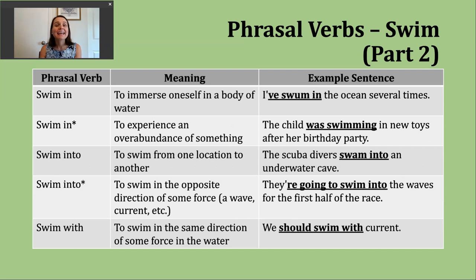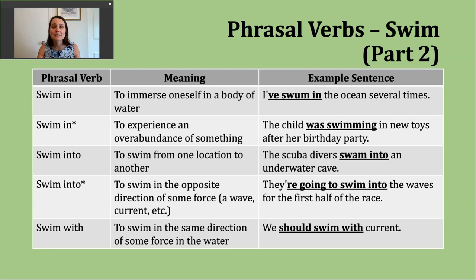The next phrasal verb is 'swim in.' This can have a couple of different meanings. The first goes back to the idea of being in water — you're immersing your whole body into some water. An example: 'I've swum in the ocean several times.' This is an example of the present perfect — we see the contraction of 'have' and then the participle form of the verb. It means my whole body has been in the ocean and I've been moving through the water. And that is true — I have done that several times.